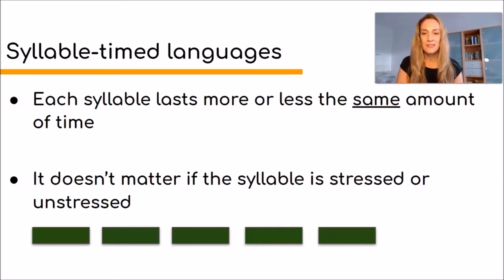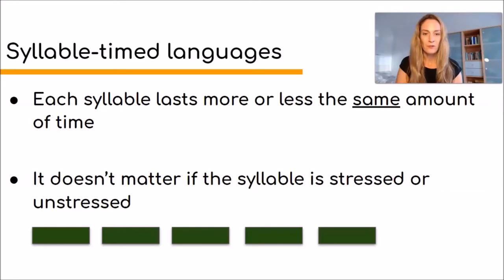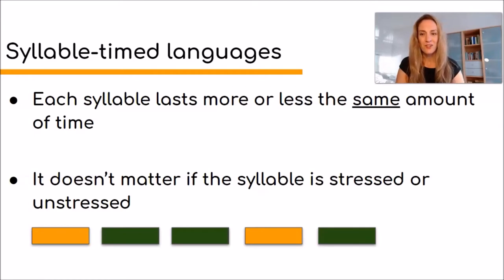At the bottom of the screen I've put some little green boxes — they're not just there for decoration. They're actually there to illustrate an utterance or a little sentence, and each of the boxes represents one syllable. So in this utterance we have five different syllables. Some are colored yellow, meaning they are stressed syllables. But in syllable-timed languages it really doesn't matter — they will all be more or less the same amount of time, whether they're stressed or unstressed.